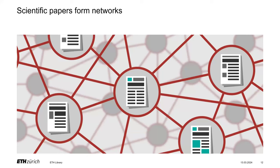If you imagine all the papers published and how they are connected to each other via the same references, same authors, same affiliations — every paper cites existing papers and hopefully will be cited by future papers. Researchers collaborate and co-author papers, and all these connections form a huge network which can be used to discover papers of interest. There are two types of networks: citation networks and collaboration networks.